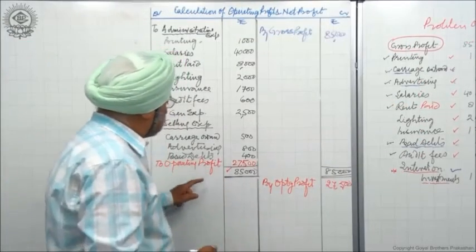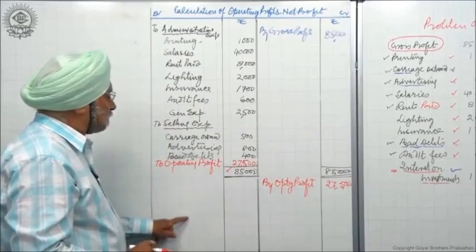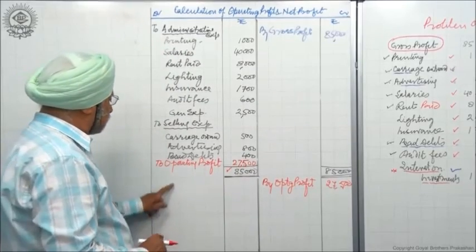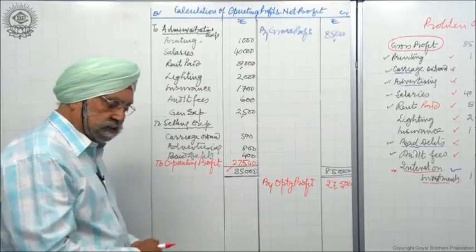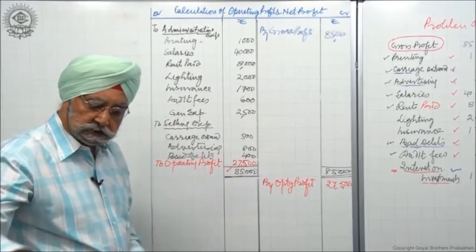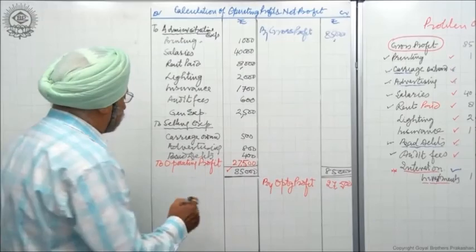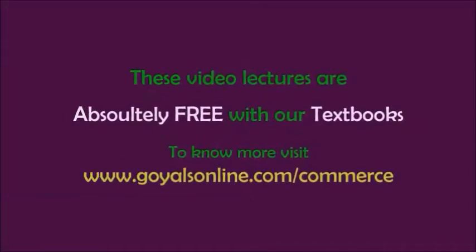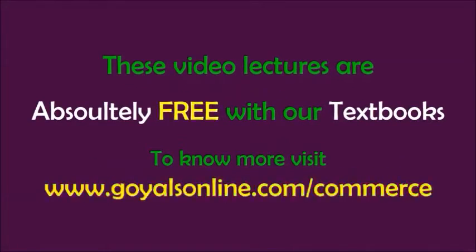Now we will write all the non-operating expenses on the debit side to calculate net profit.